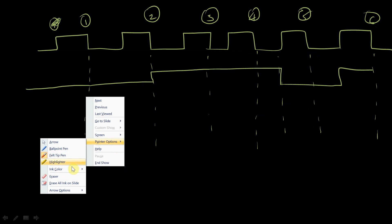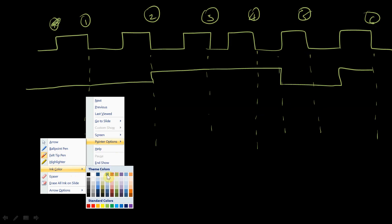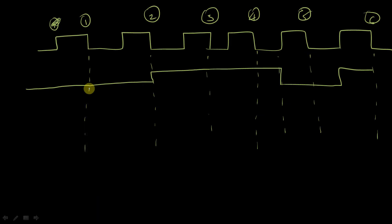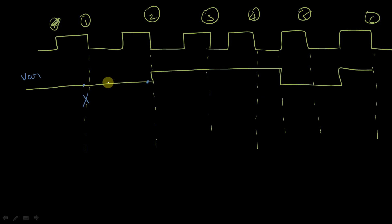Coming to the first evaluation point, the value of your variable is equal to zero. And at the previous evaluation point, it is unknown. So here it is going to fail. At the second evaluation point, the value was equal to zero, and at the previous evaluation point it is also equal to zero. So there is no change — it is stable. So here the output is going to be false and the assertion is going to get failed.